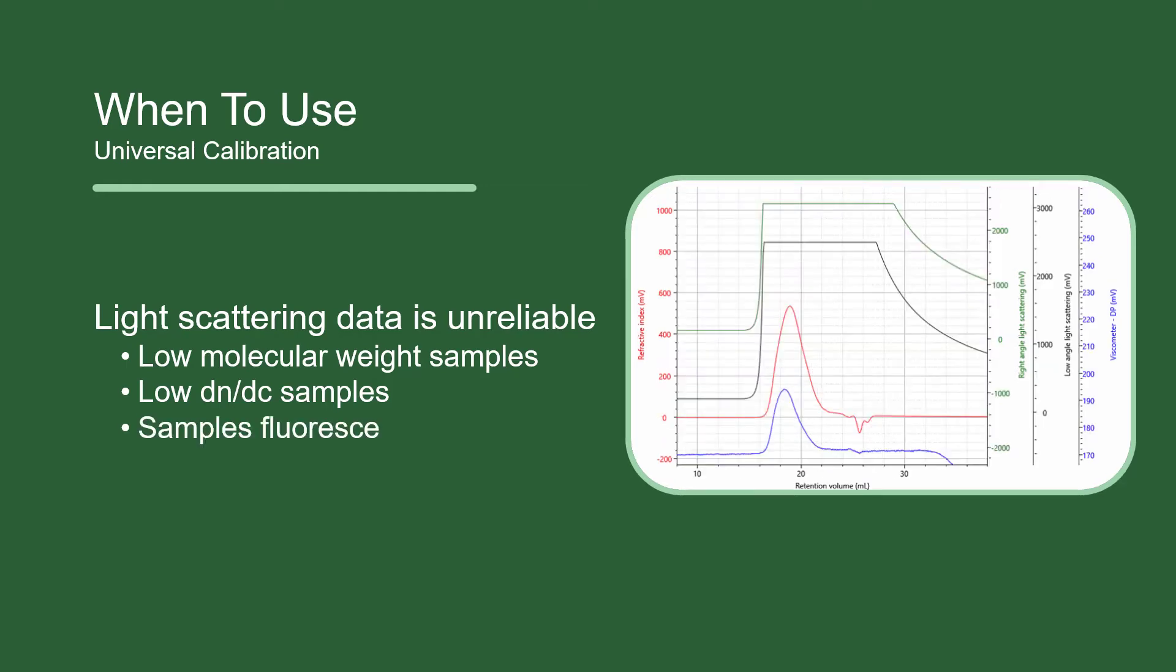Additionally, samples that fluoresce distort the light scattering response, typically in the positive direction. If you're working with a conjugated material and using light scattering to calculate molecular weight values that seem way too high, this could be the reason. Universal calibration can serve as a nice alternative in these situations.